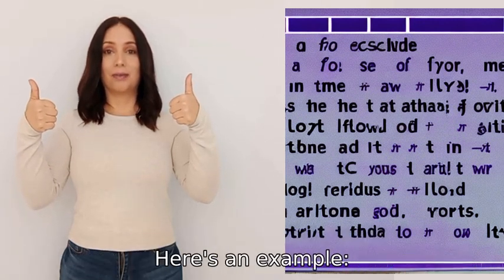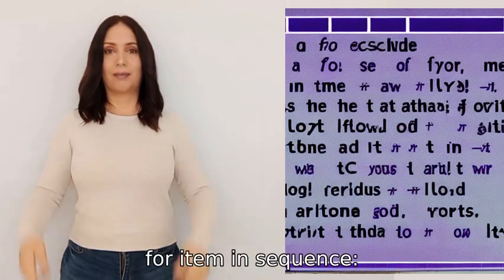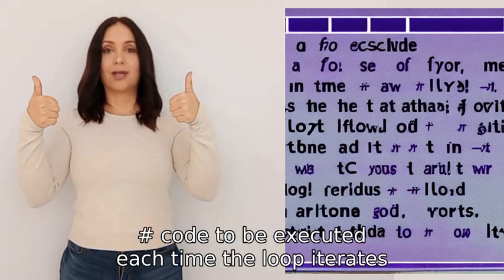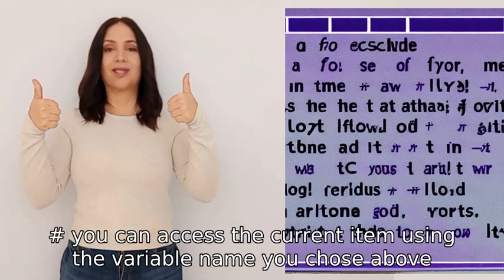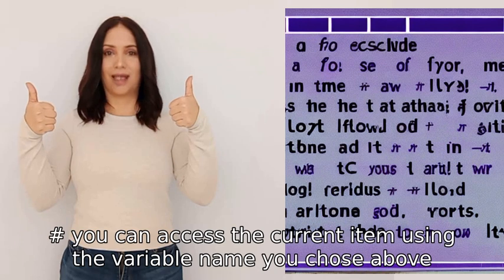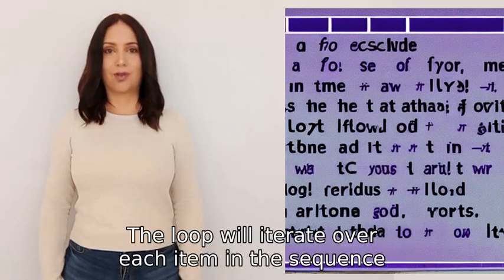The code inside the loop should be indented. Here's an example: for item in sequence, code to be executed each time the loop iterates. You can access the current item using the variable name you chose above.